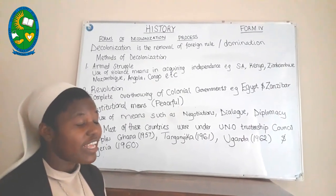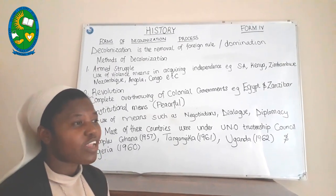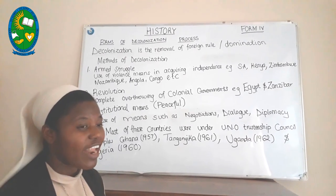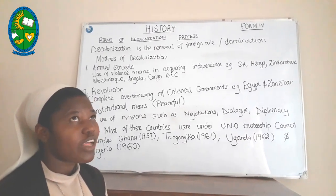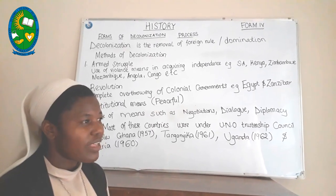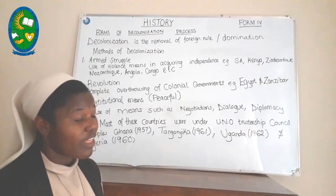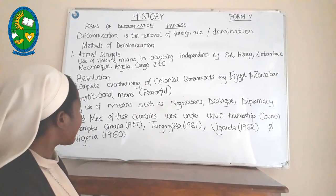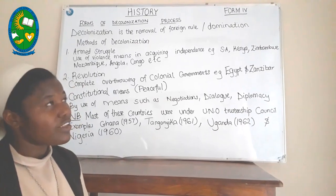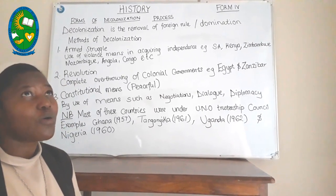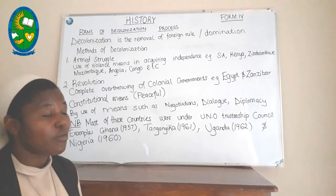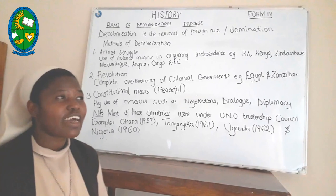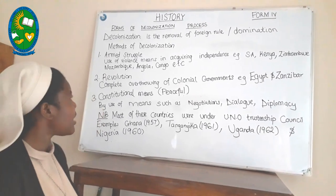Because of this oppression, Africans reacted against colonial rule and organized themselves, forming different nationalistic movements and resistance movements in order to counteract the colonial rule. Therefore, the Africans had to look at different forms of struggle to get their freedom from the colonial government, and different African countries used different forms of decolonization.